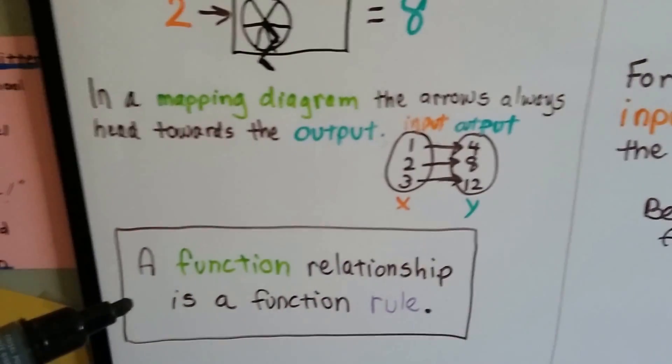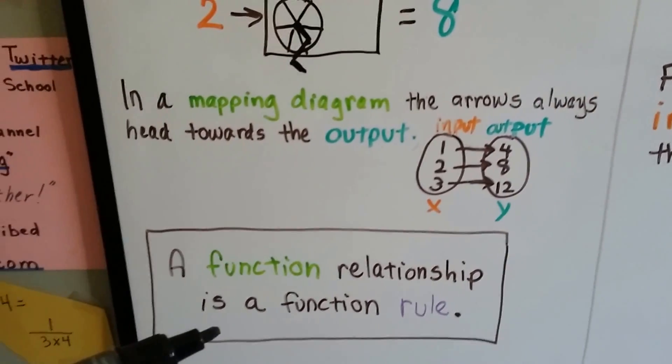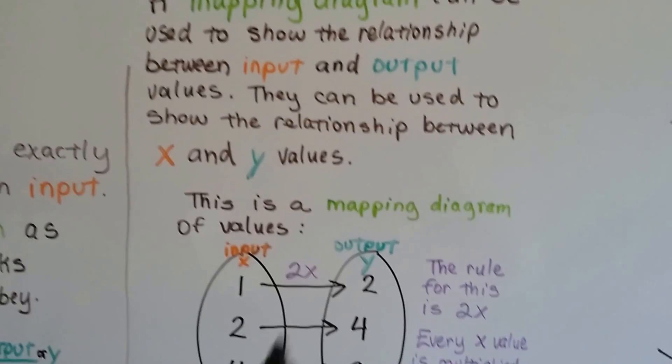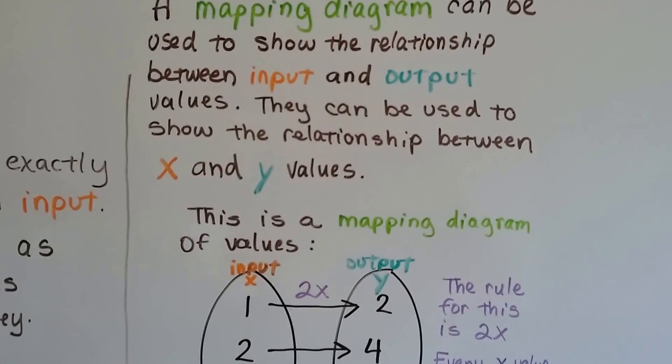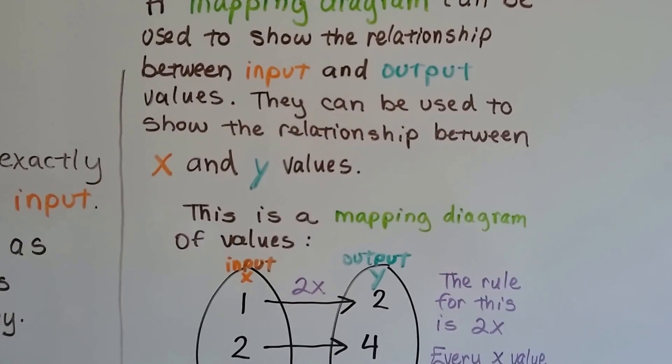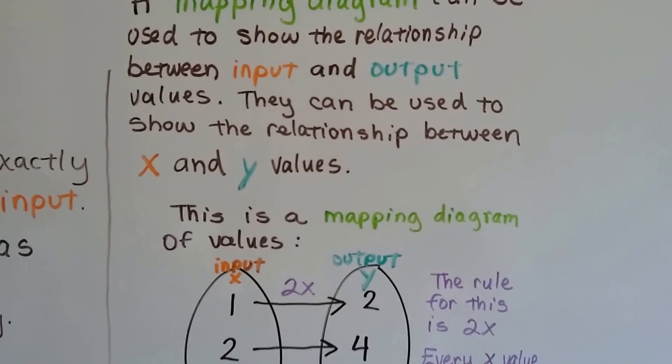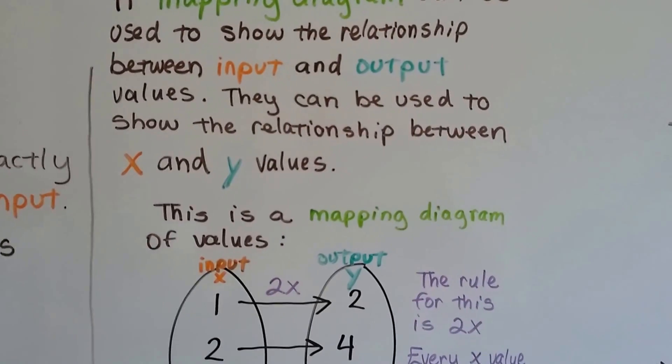And remember, a function relationship is just a function rule. A mapping diagram, that's these two ovals with the arrows, they can be used to show the relationship between input and output values. That means they can be used to show the relationship between x and y values.